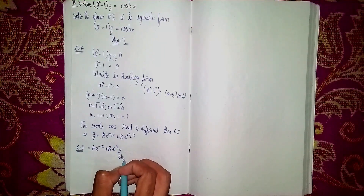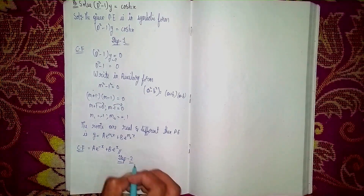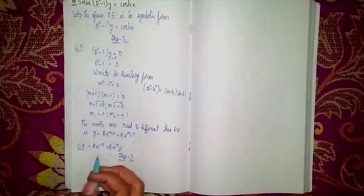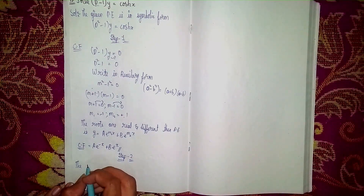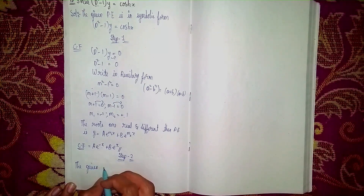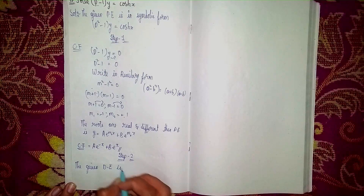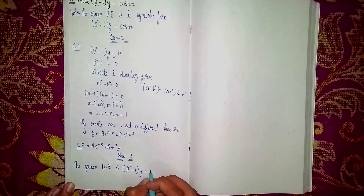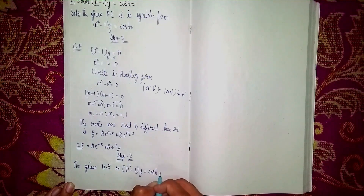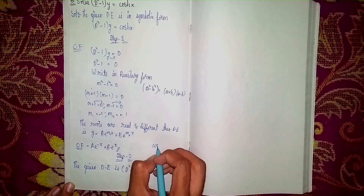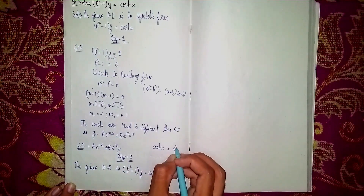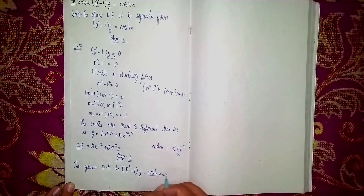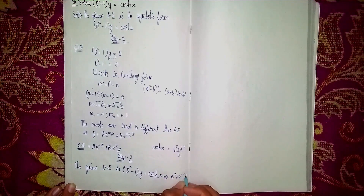Now step two is to find the particular integral. The given differential equation is D² minus 1 into y equals cosh(x). We can write cosh(x) as (e^x + e^(-x)) / 2. So the right-hand side becomes (e^x + e^(-x)) / 2.